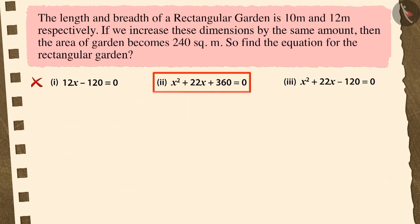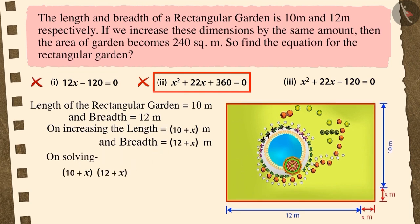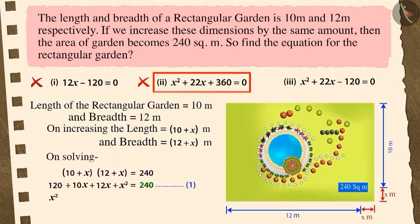If you selected option 2, then it is a good attempt, but this is also incorrect. Because to solve this question, you have increased the length and breadth, but while transposing the term on the RHS to the LHS, you didn't change the sign due to which the answer is incorrect.